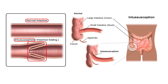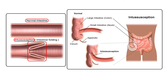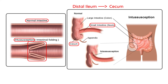This eventually leads to a lot of problems, including ischemia and perforation. Most commonly, the portion involved is the distal ileum — the very end of the small intestine — and it telescopes into the cecum, which is right at the beginning of the large intestine. The telescoping is happening right in that location.